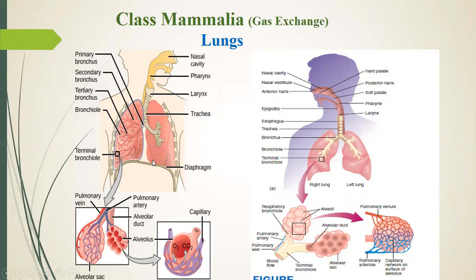This is our thoracic region — the region where the lungs are located. And this is our diaphragm. It is muscular and it can contract and relax. This is very important for respiration — for inhalation, bringing air in, and for exhalation, pushing air out. The diaphragm plays a very important role.